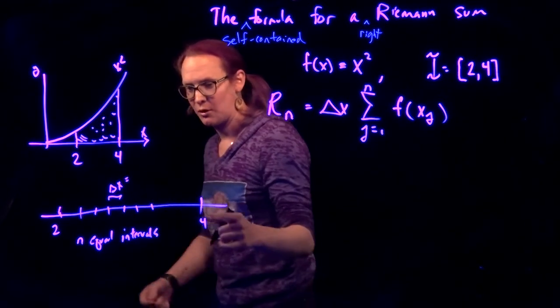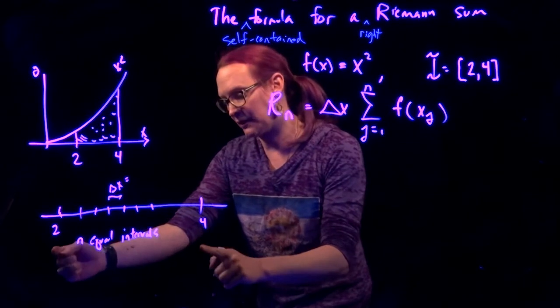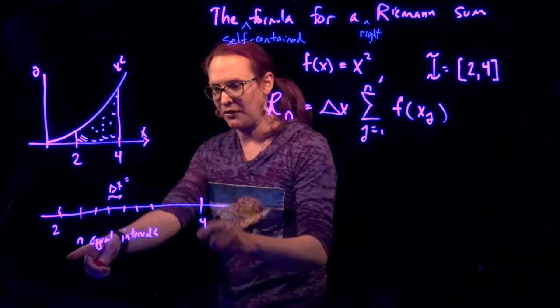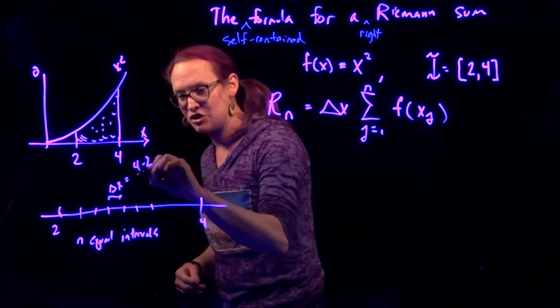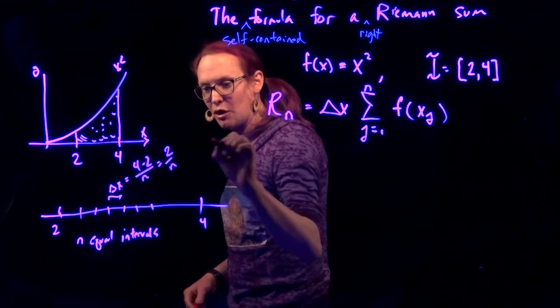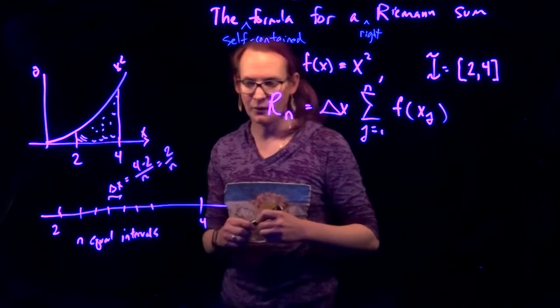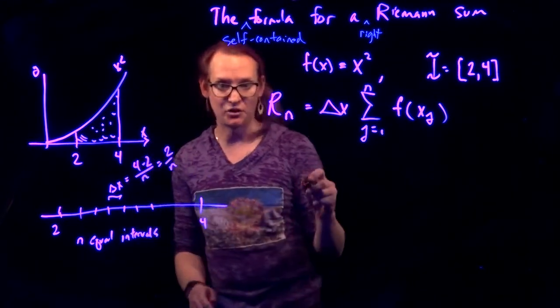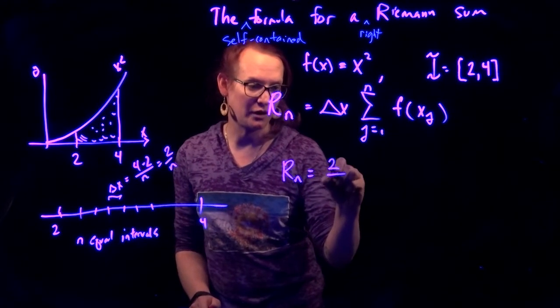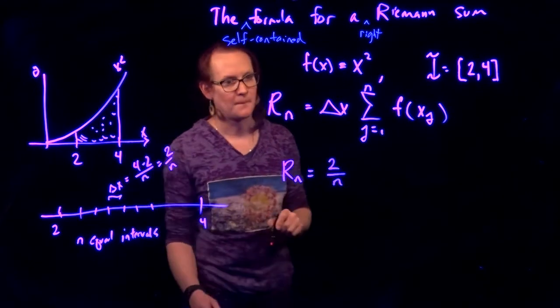So this is equal to, well, what's the total width? Because we're taking the total width and breaking into n equal pieces. The total width is 4 minus 2 over n, which is equal to 2 over n. So we can replace delta x by 2 over n. R sub n equals 2 over n. Cool.